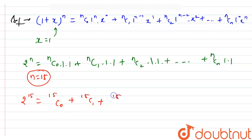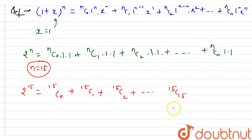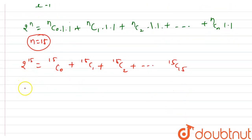2^15 equals to 15C0 + 15C1 + 15C2 plus and so on 15C15.